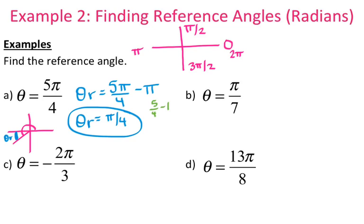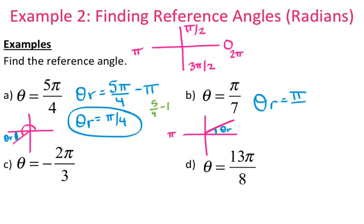Pi over 7: go ahead and draw that out. Pi over 7 is going to be in the first quadrant, because it's basically 1 seventh of pi, and pi is all the way over here, so 1 seventh of that would be in the first quadrant. So my reference angle is this little wedge. Since I'm in the first quadrant, my reference angle is the same thing as my original angle.